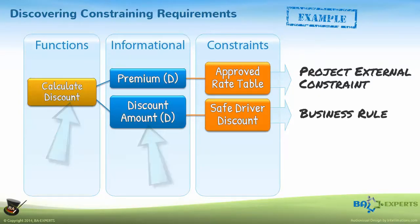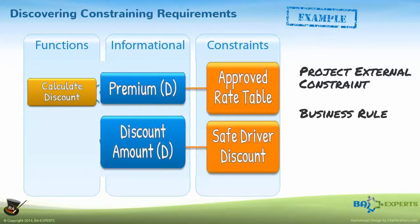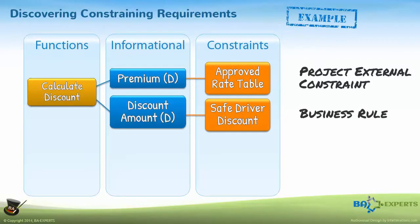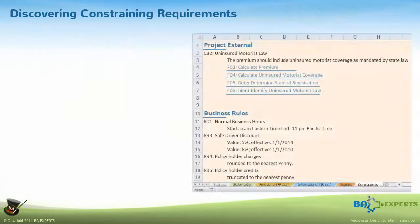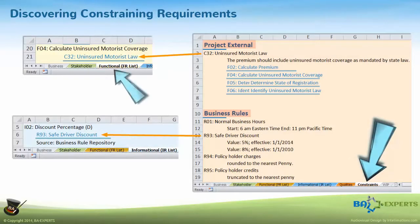You previously connected each data element to the functions that create or consume it. By associating the constraint or rule with the data component, you're automatically constraining the related functions. Since each constraint may impact multiple functions, we recommend documenting the external and internal constraints in one place and referencing them in each impacted functional or informational requirement.